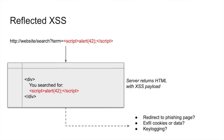Reflected cross-site scripting attacks involve a malicious payload which is returned embedded within the HTML coming from the web server you're trying to view. In the example here on the screen, you can see that we visited a page which takes a search term as part of the URL. The web server takes that malicious payload and embeds it as if it was HTML written on the server, returning that to the client requesting the page. This malicious script could do any number of things as indicated here on the slide.